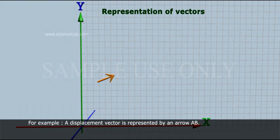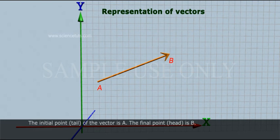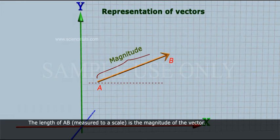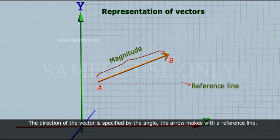For example, a displacement vector is represented by an arrow AB. The initial point, or tail, of the vector is A. The final point, or head, is B. The length of AB measured to scale is the magnitude of the vector. The direction of the vector is specified by the angle the arrow makes with a reference line.